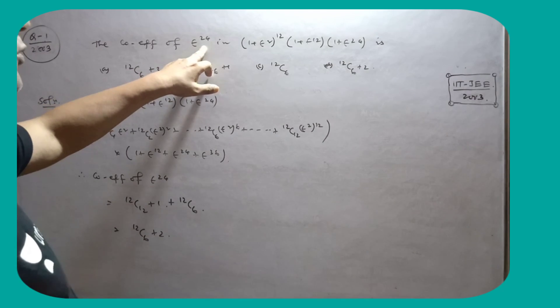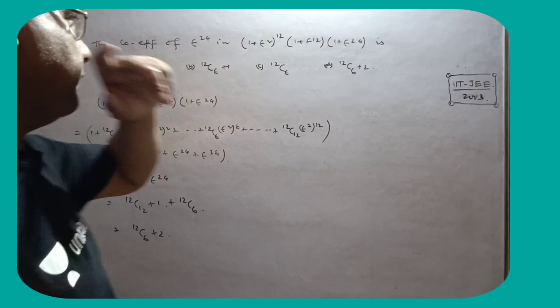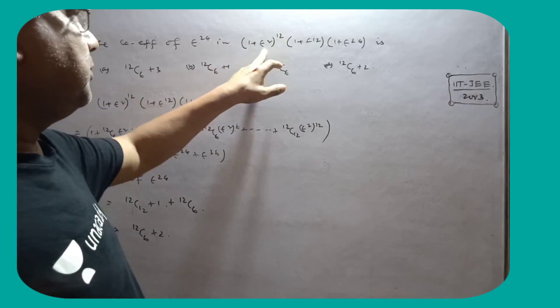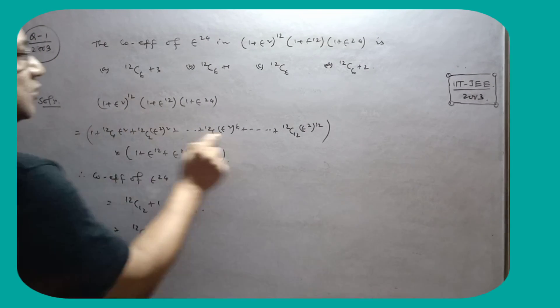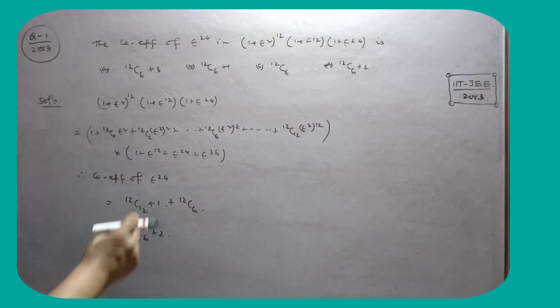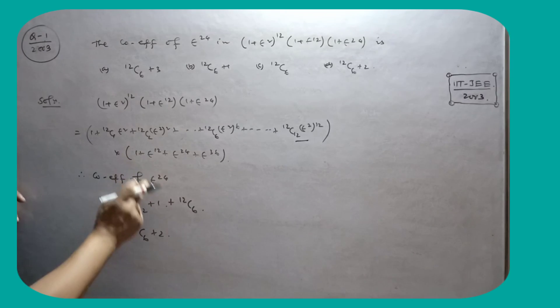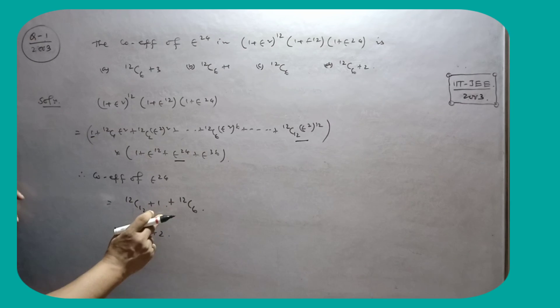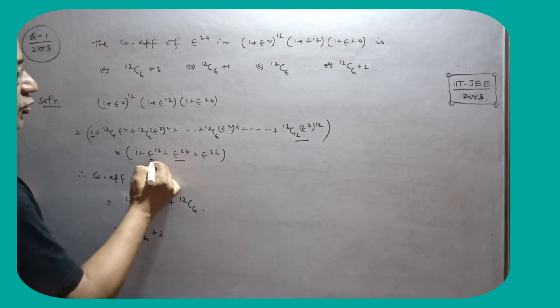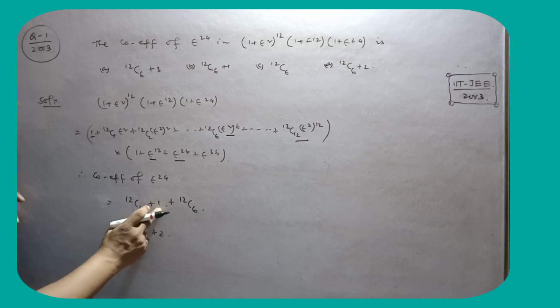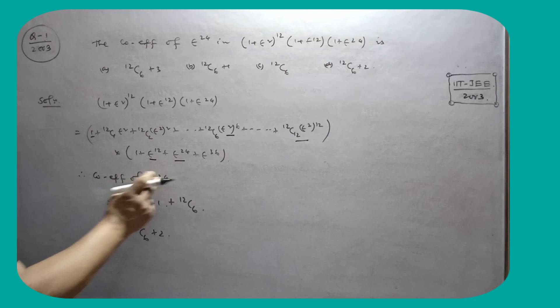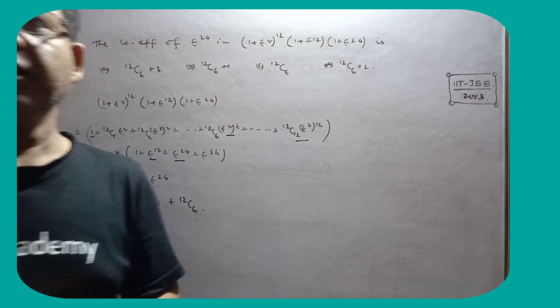The coefficients of t to the power 24 in these expansions. So (1 plus t squared) to the power 12, you have to expand this or simply multiply. The coefficient of t to the power 24: this into 1 so that is 12C12, and this into 1 so that is 1 and t to the power 12 and t to the power 12, 12C6. The value is 1, this value is 1, so 12C6 plus 2 is the coefficient of t to the power 24.